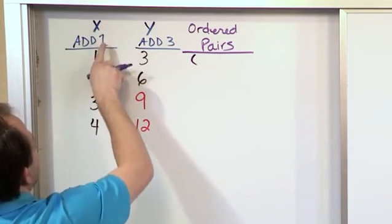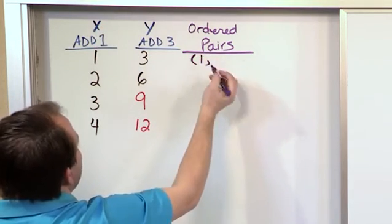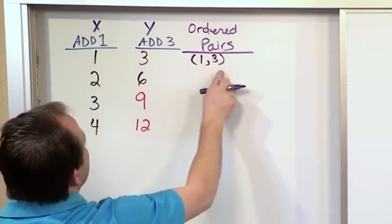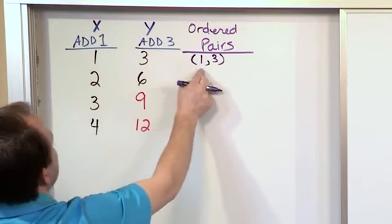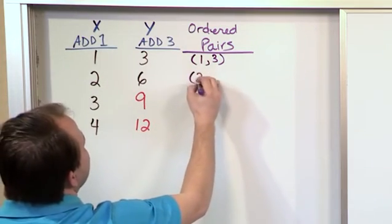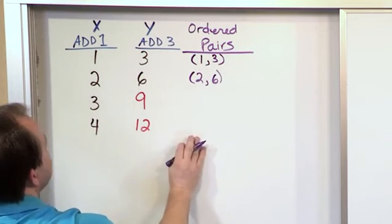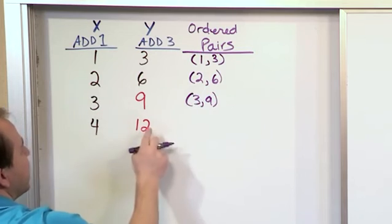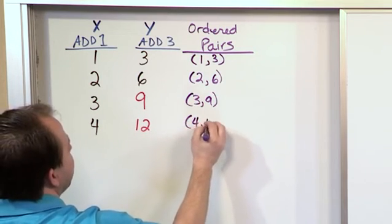So the ordered pair, you put the first column number here with a comma, and then the second number you put right next to it. So the ordered pair for this line is (1, 3). Very simple, right? The ordered pair for this line is (2, 6). The ordered pair for this line is (3, 9), and the ordered pair for this line is (4, 12).